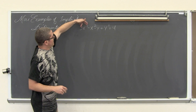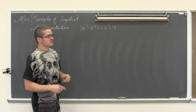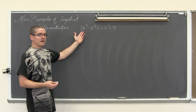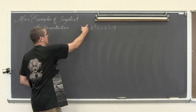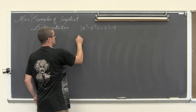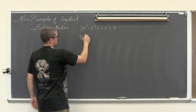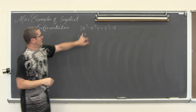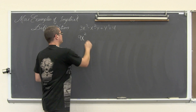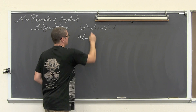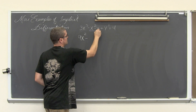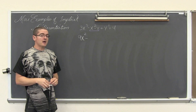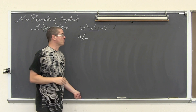For 3x cubed, differentiating with respect to x: 3 times 3 is 9, bring the exponent down by a value of 1, we get 9x squared. Minus — now this x squared times y is the product of two factors, so we have to use the product rule.